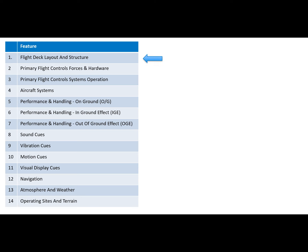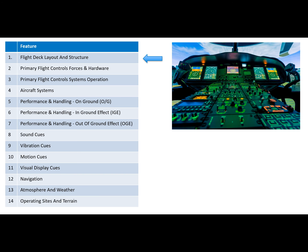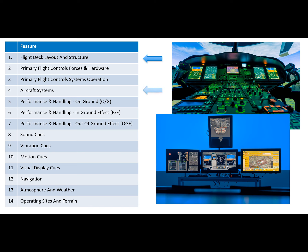Features number one and four also split hardware and system operation. Feature one is about the flight deck layout and structure — level S requires specific hardware with correct touch and feel, as seen today in full flight simulators; level R means the flight deck is partially as in the simulated type, with only part of the flight deck simulated or hardware based on something like touch screen panels. Feature number four is about the aircraft systems and avionics operation, enabling combinations such as representative cockpit panels with specific system operation — this is the granularity the framework provides.